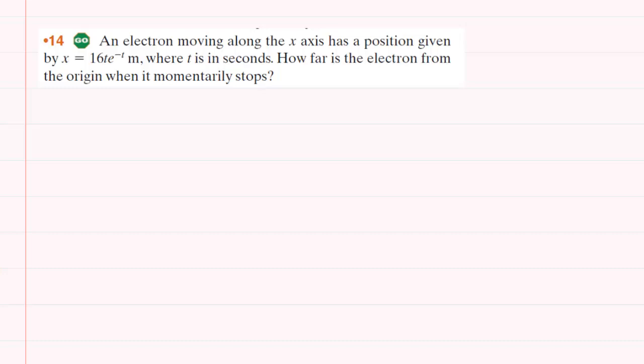In order to determine how far the electron is from the origin when it momentarily stops, we have to understand that when the question mentions that it stops, then at that moment its velocity is equal to 0 meters per second.